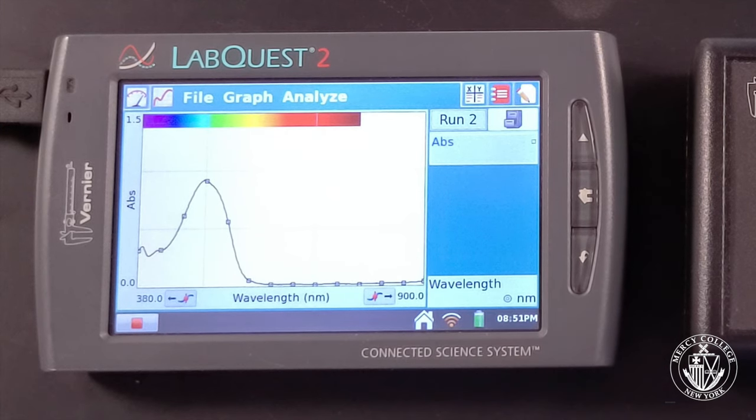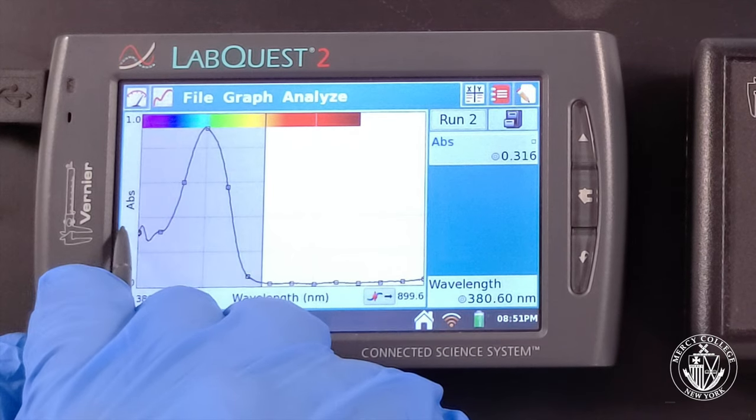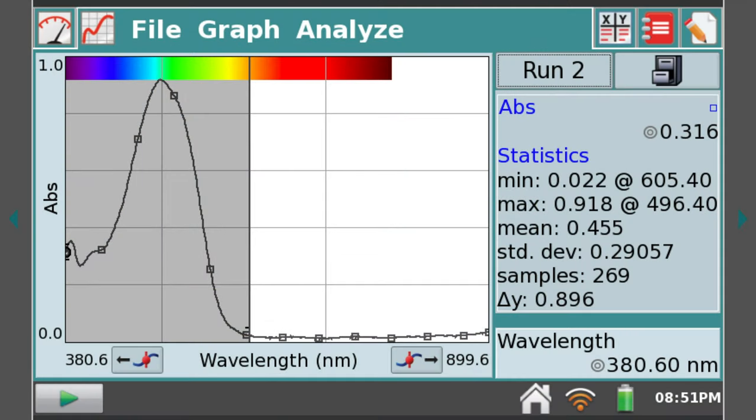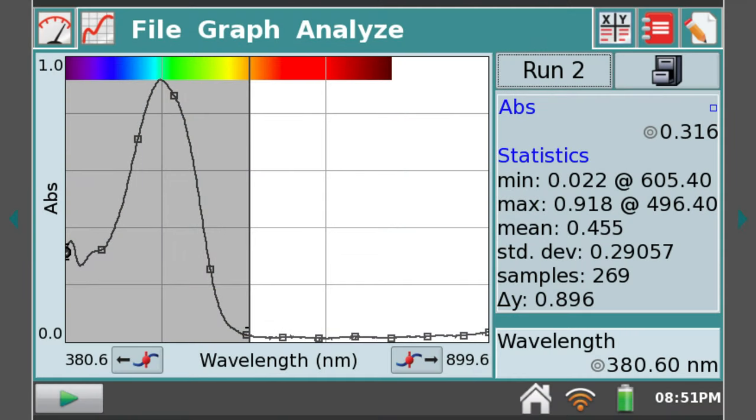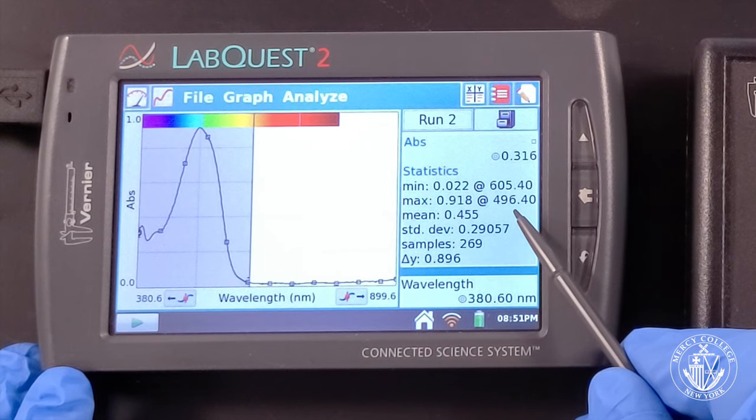Stop the data collection when you have obtained a stable spectrum. Again determine your peak position and maximum absorbance by selecting Statistics from the Analyze menu. Here we see that this dye also absorbs in the blue-green region of the spectrum, with a maximum absorbance of 0.918 at a wavelength of 496.4 nanometers.